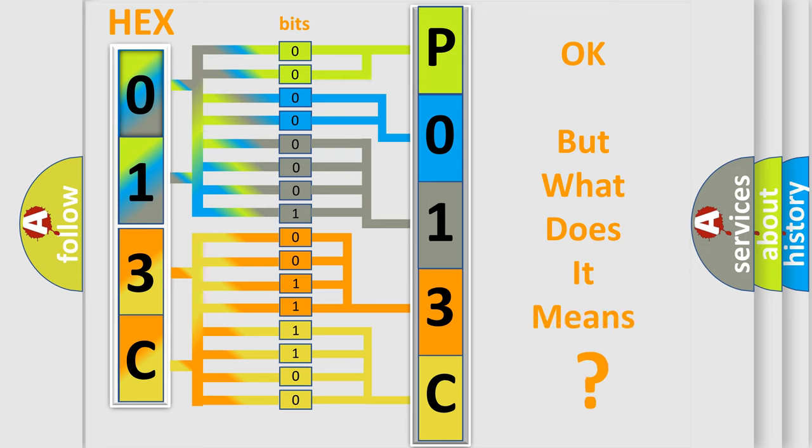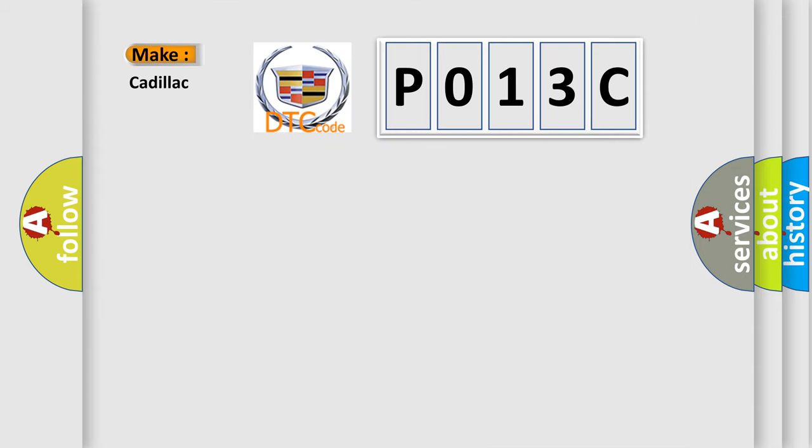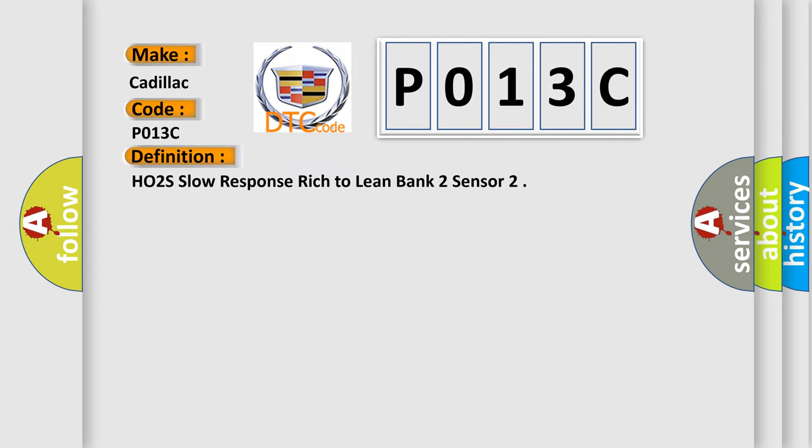We now know in what way the diagnostic tool translates the received information into a more comprehensible format. The number itself does not make sense to us if we cannot assign information about what it actually expresses. So, what does the Diagnostic Trouble Code P013C interpret specifically for Cadillac car manufacturers? The basic definition is HO2S slow response rich to lean bank 2 sensor.